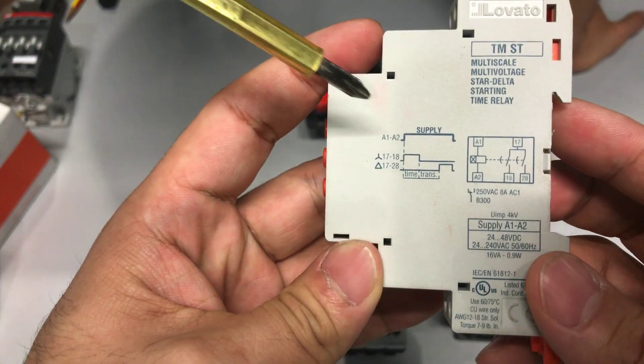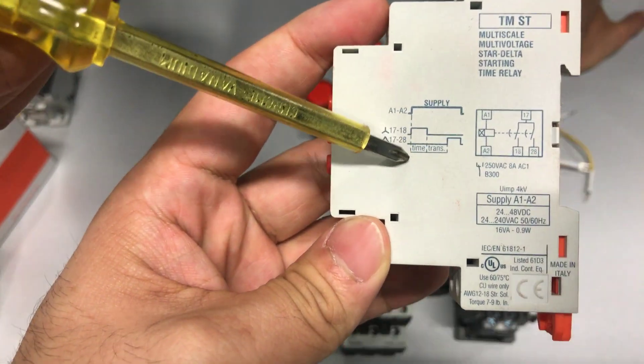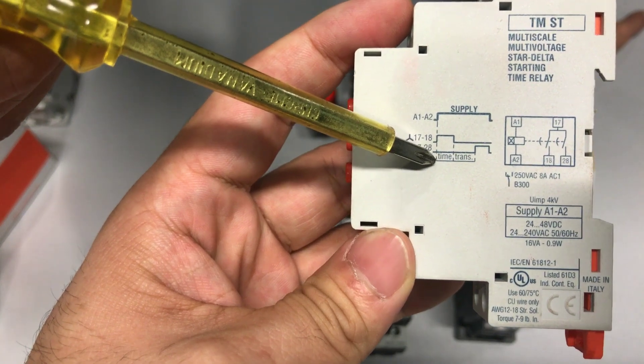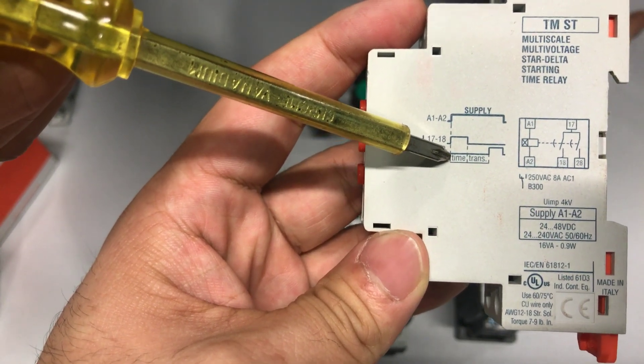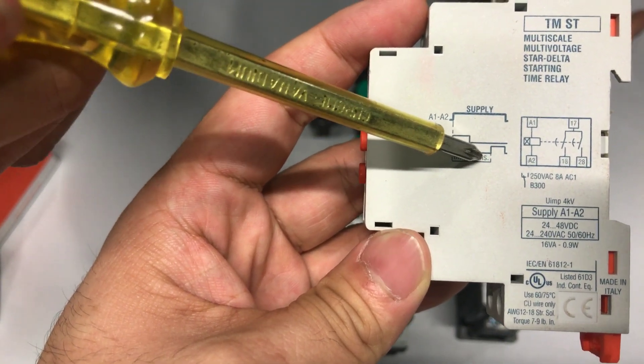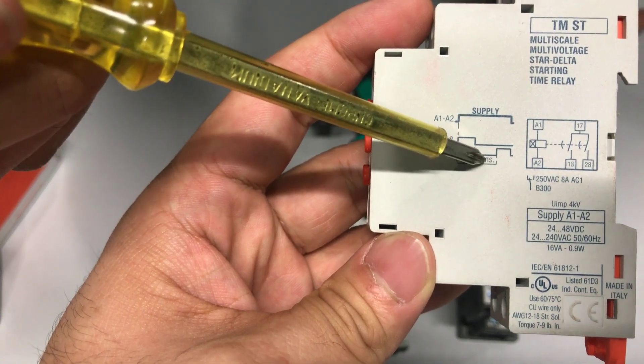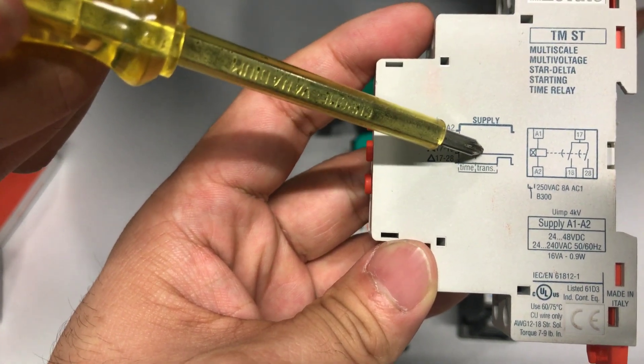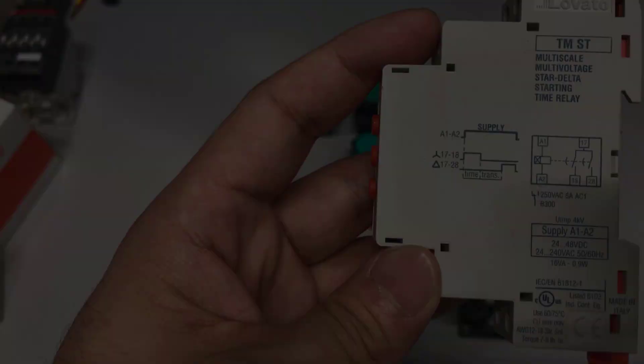So the star time period can be set by the first and the second dial, and the first one acting as the multiplier. Then you set the transition delay with the third dial. The maximum transition time you can set for this timer is 300 milliseconds.